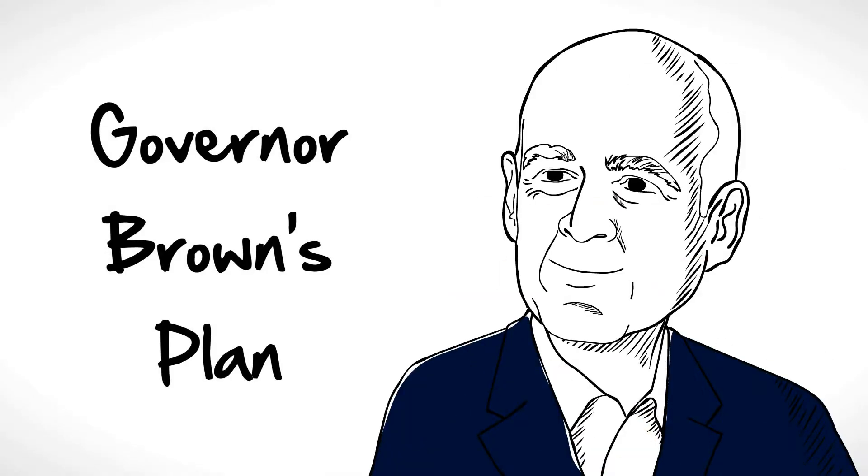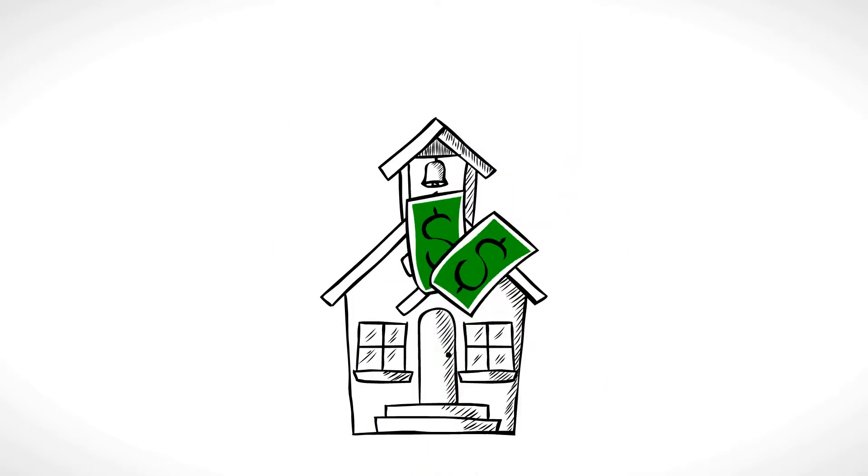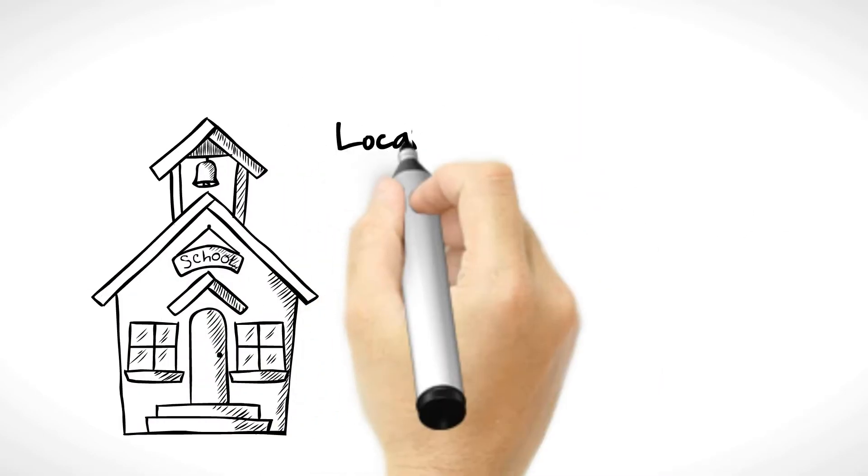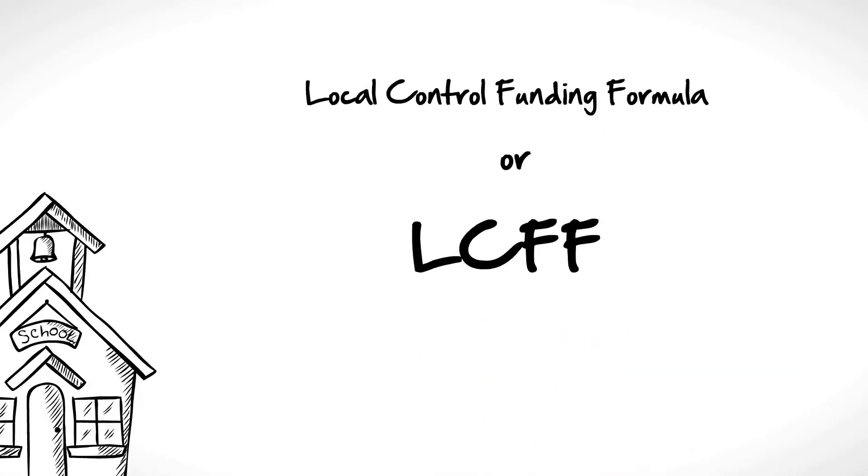The governor has a plan to fix these funding problems. He wants to improve the way we fund schools. The plan is called Local Control Funding Formula, or LCFF. The plan does the following.